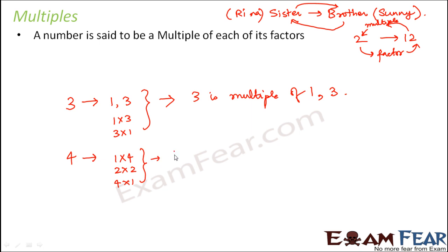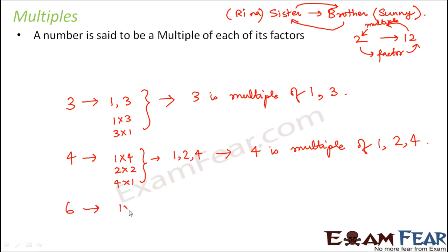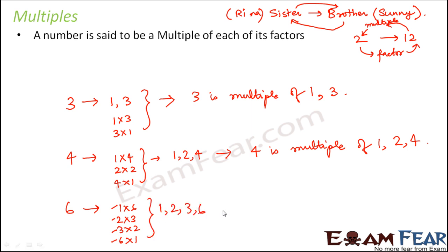So 4 is a multiple of 1, 2, and 4. Now let's talk about 6. The factors of 6 are 1, 2, 3, and 6, since 1×6, 2×3, 3×2, 6×1. This means 6 is a multiple of 1, 2, 3, and 6. That is the meaning of multiple.